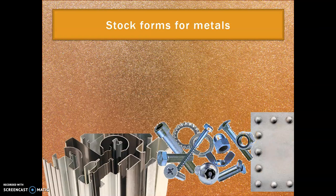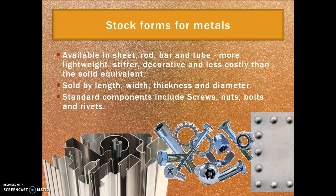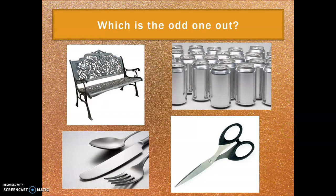We also need to go through stock forms, as we do for every other material. Metals are available in sheet — think mild steel — and rod, bar, and tube — think copper. Tube is more lightweight, stiffer, decorative, and less costly than the solid equivalent. It's sold by length, width, thickness, and diameter. Standard components include screws, nuts, bolts, and rivets.